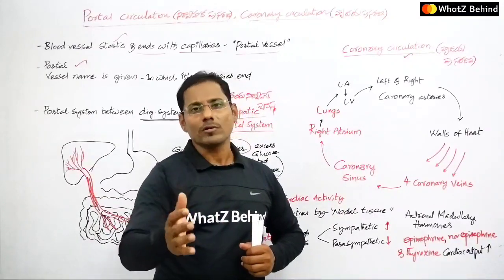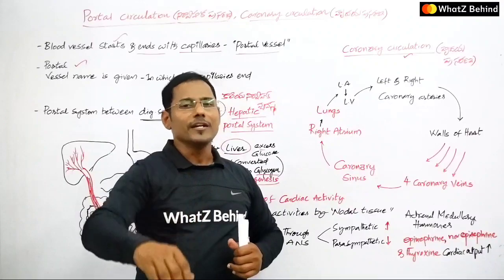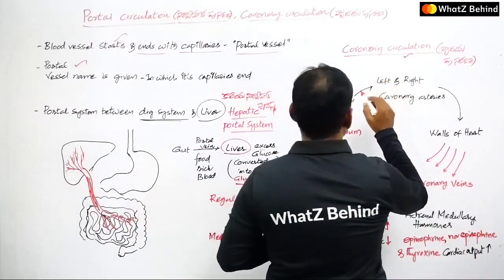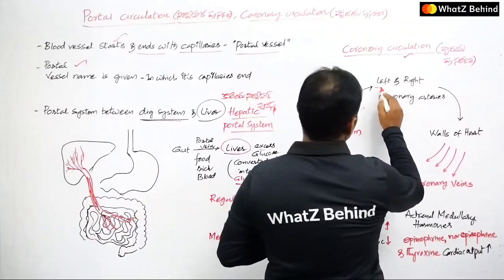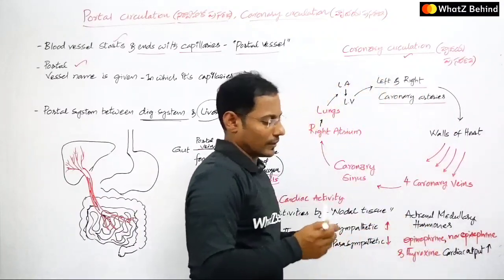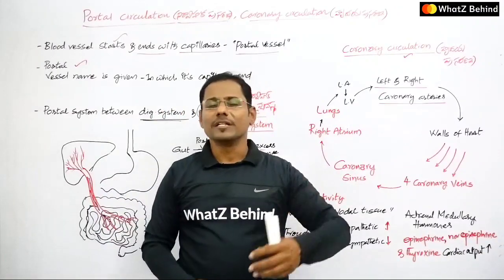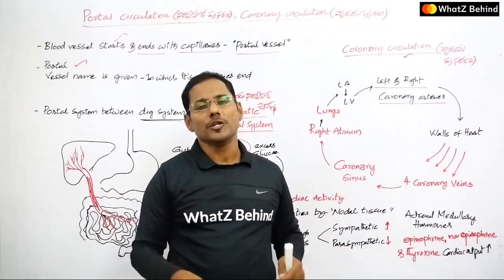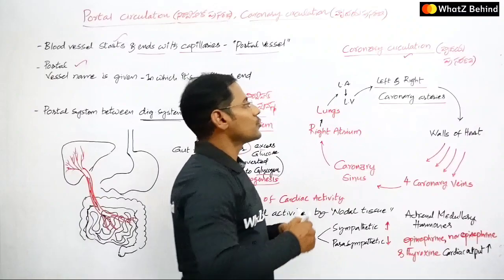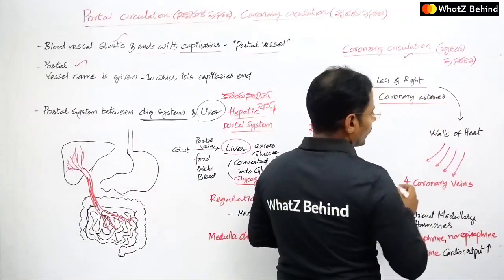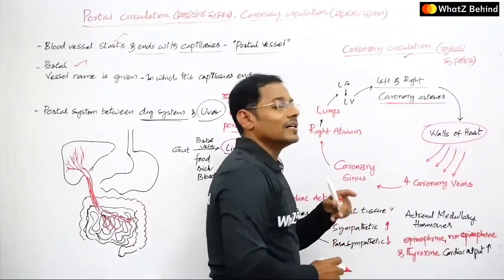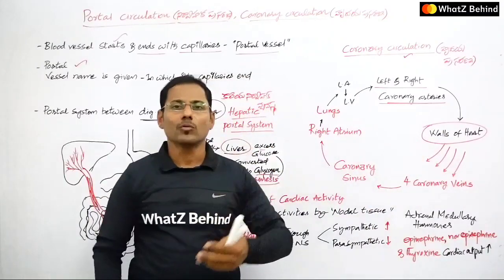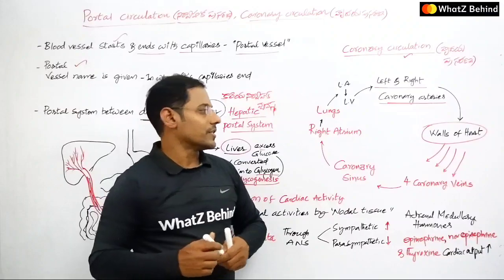The heart muscles compulsorily require oxygenated blood. Deoxygenated blood is then returned from the heart. This is a very short circulation. The heart has left and right coronary arteries which are branches from the aorta, starting from the left ventricle. The coronary arteries branch into two — left and right — supplying oxygenated blood to the heart muscles.